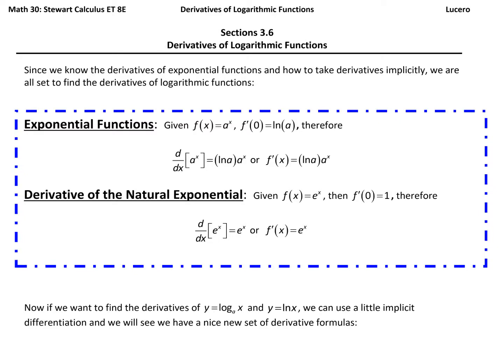Now that we know implicit differentiation, let's take a look at our logarithmic functions, because we already know the derivatives of our exponential functions. When we take the derivative of a to the x, we get back ln of a times a to the x. And when we take the derivative of e to the x, our derivative is simply e to the x.